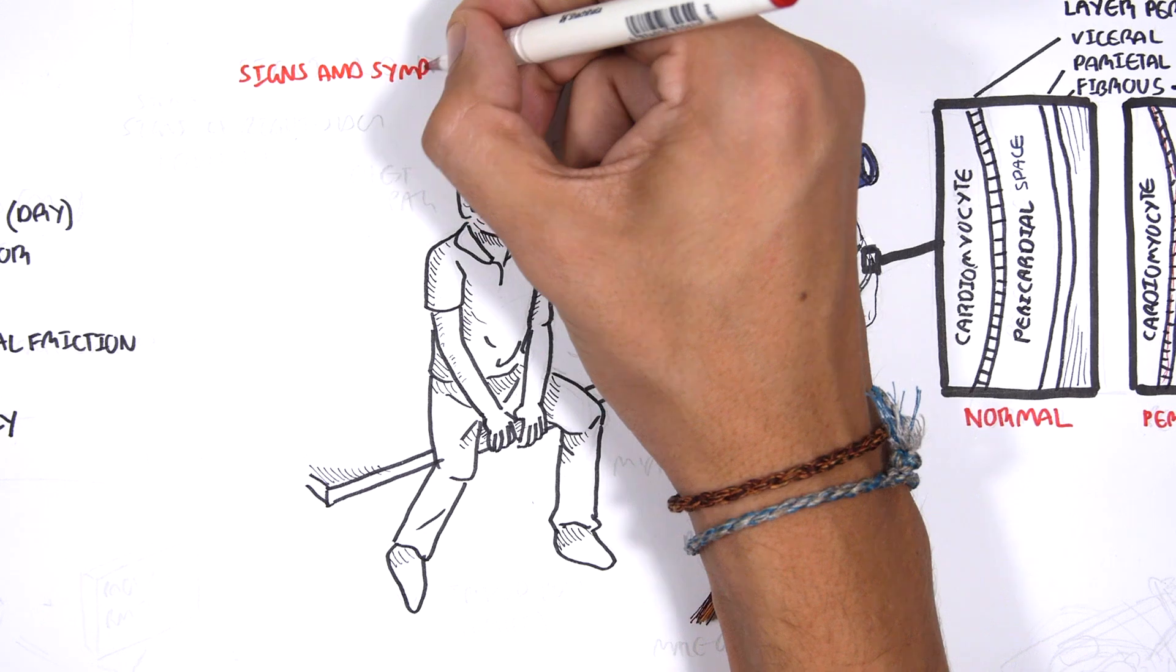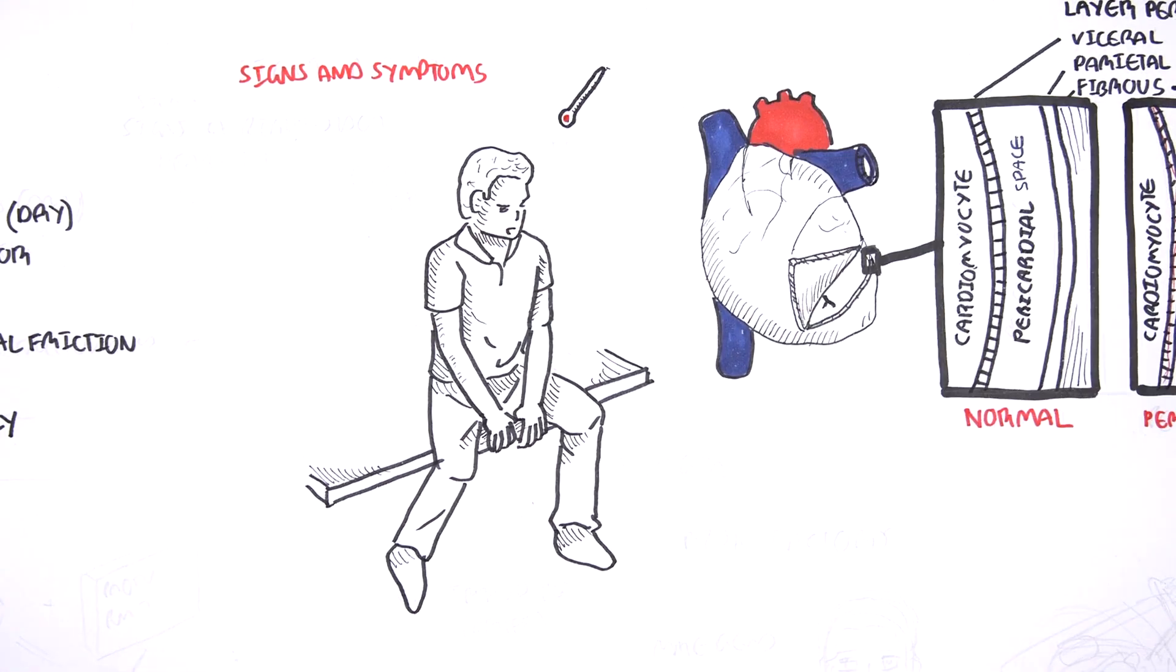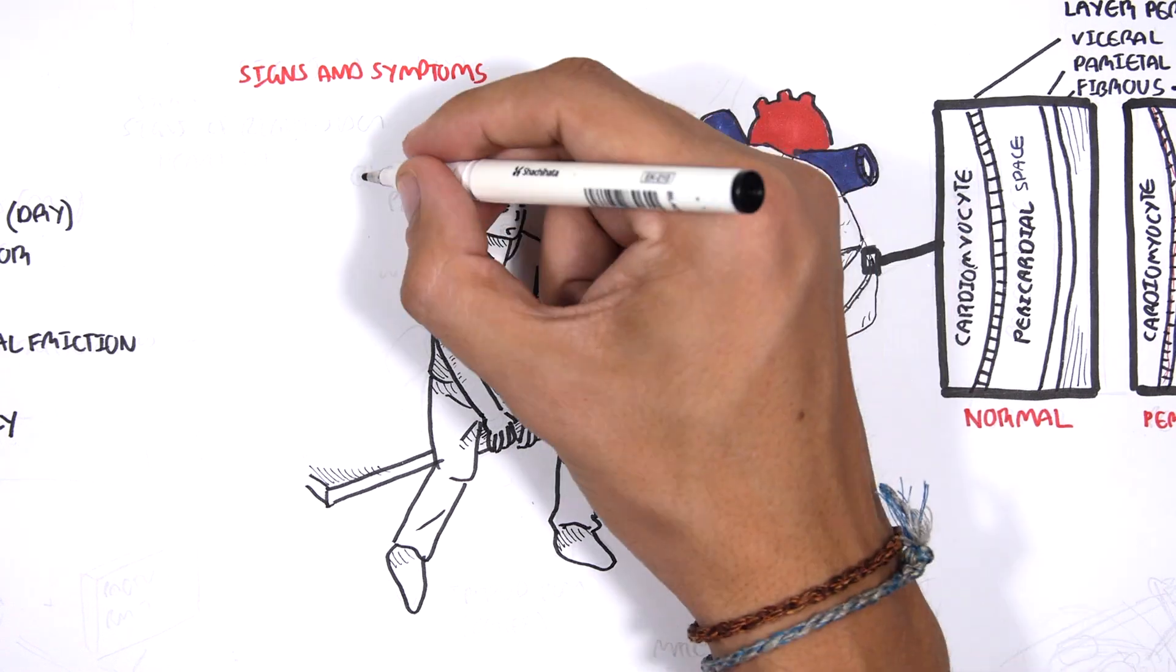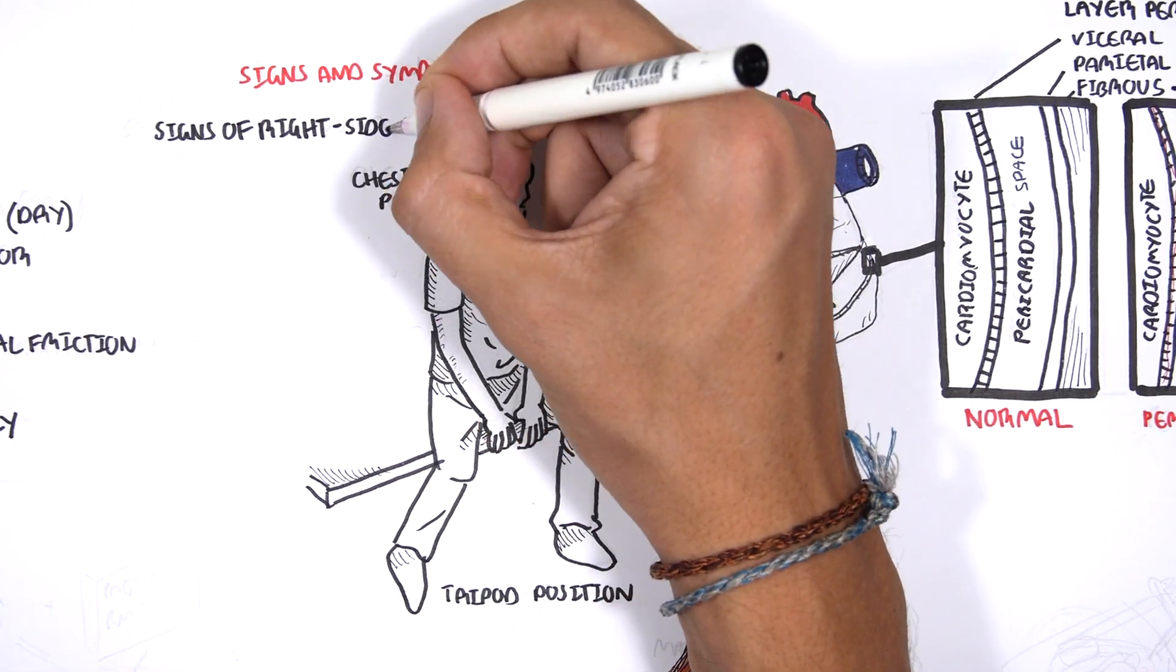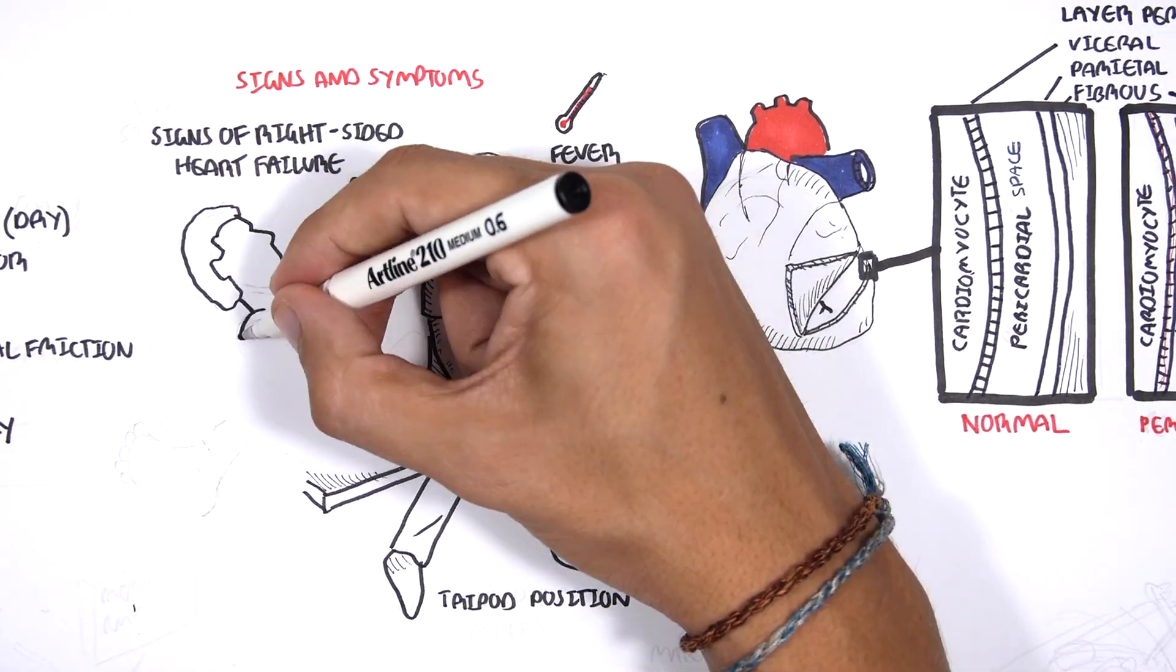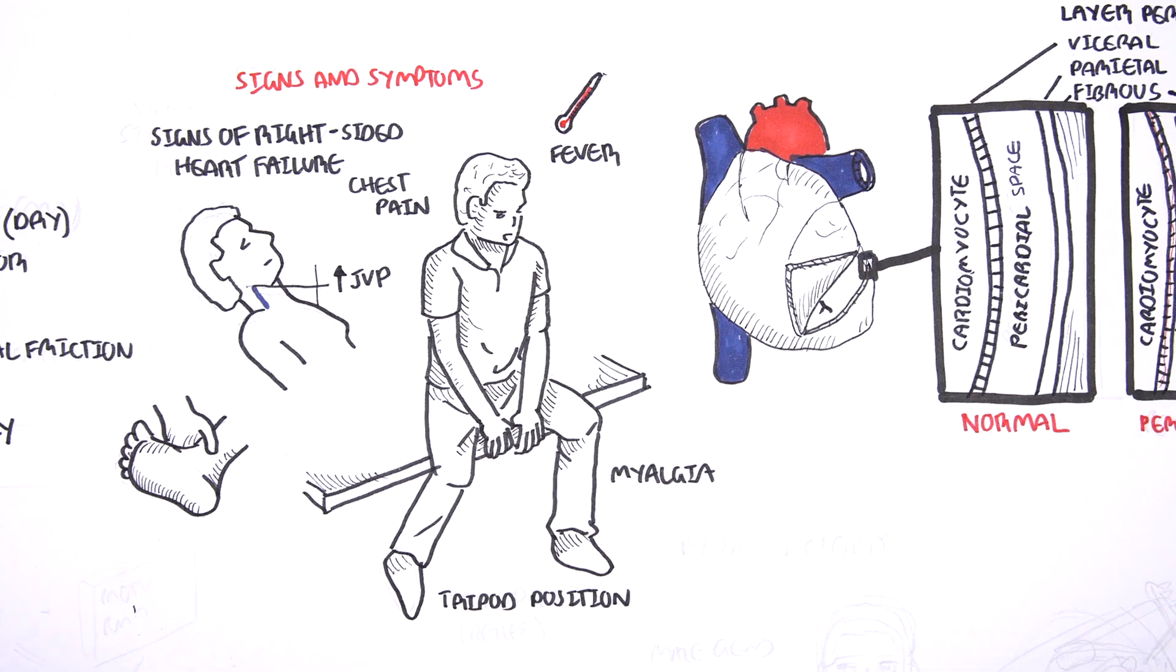The signs and symptoms of pericarditis include fever, myalgia, chest pain, tripoding position which relieves the pain, and signs of right-sided heart failure, including a raised JVP and peripheral edema.